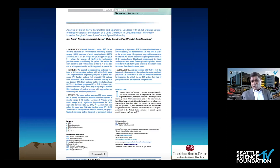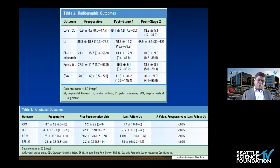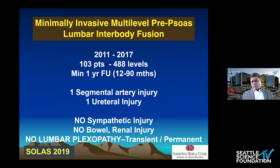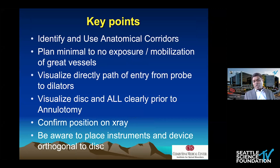We published our results looking at all pre-service approaches across the board. There's been good restoration of lordosis as well as good functional outcomes. In terms of complications, we had one segmental artery injury and one ureteral injury early in 2013, but since then no sympathetic, bowel, renal, or lumbar plexopathy — even transient or permanent. Use your corridor, minimally expose or mobilize the great vessels. Directly visualize the path of your probe and dilator. See the ALL if you can — it gives you better confidence as to where you are. Confirm on X-ray, then be prepared to go orthogonal. Straighten your device to get 90 degrees to the disc and you'll be in a safe place to do this approach.